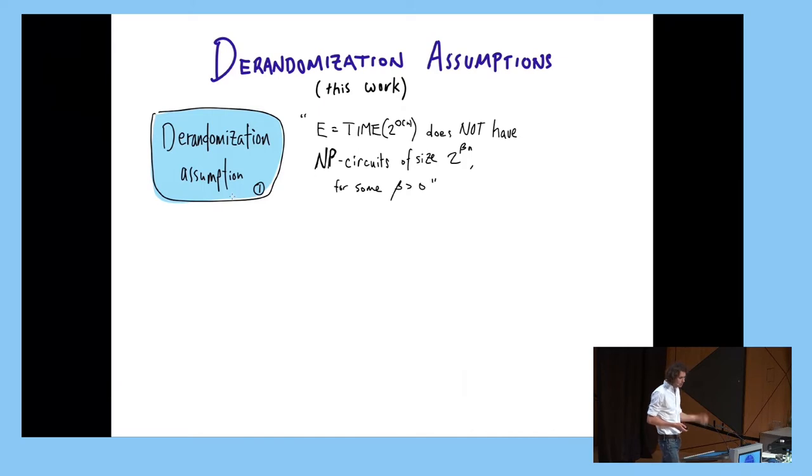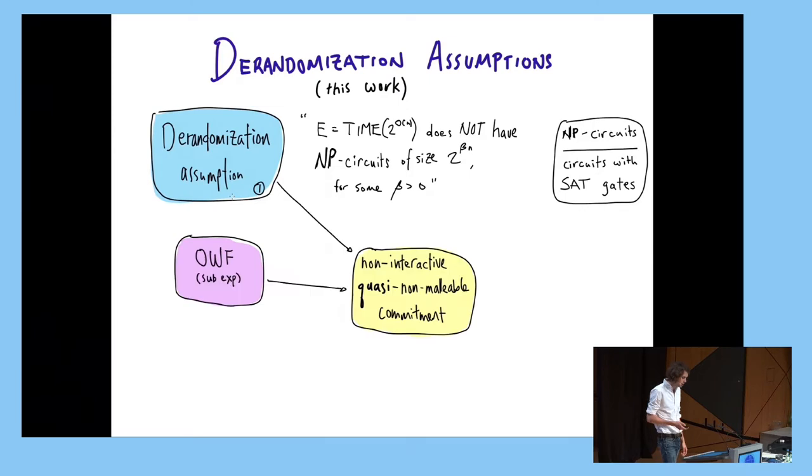So, in this work, we show that if E does not have NP circuits, so what is an NP circuit? This is a circuit with SAT gates which has access to a SAT oracle. This is the assumption we use and along the way we show that if you combine this with sub-exponentially secure one-way functions, you can get what we call non-interactive quasi-non-malleable bit commitments. I've already introduced way too many notions than I should in 10 minutes, but roughly what is this object up here? You can think of it as a non-malleable code that cannot be decoded efficiently in a very strong sense. It's a commitment so it has this hiding property. You can't get any information efficiently.